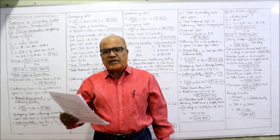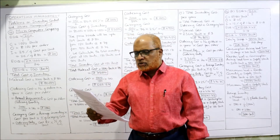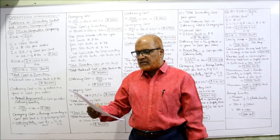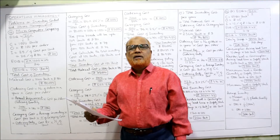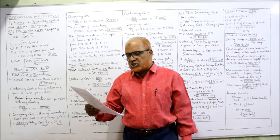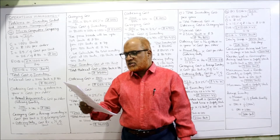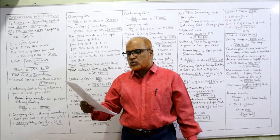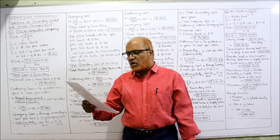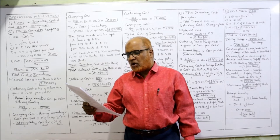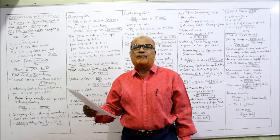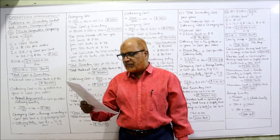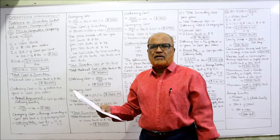Problem number 10: A microcomputer company purchases a component for which it has a steady usage of 1,000 units per year. The annual consumption is 1,000 units, the ordering cost is 100 rupees per order, and the inventory carrying cost per year is 25%. The unit cost of the component is 80 rupees. Calculate the optimal ordering quantity (EOQ) and the total cost of inventory.